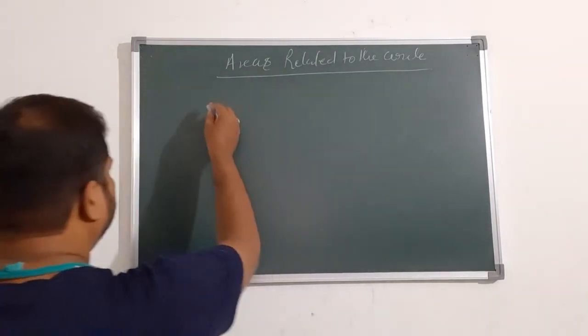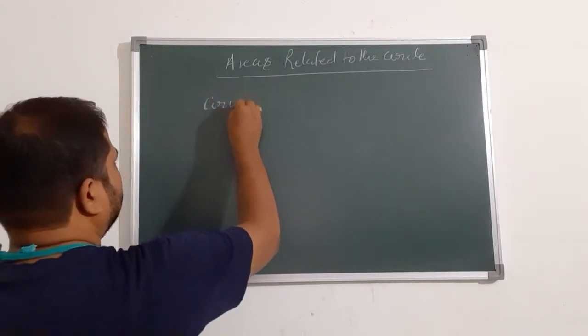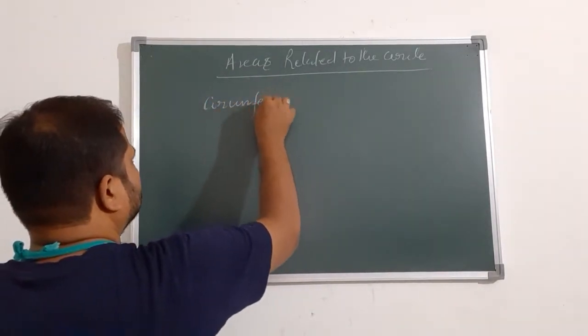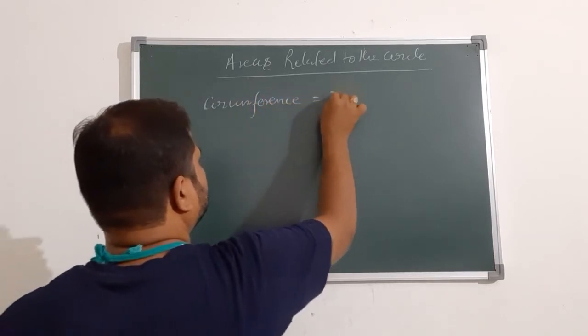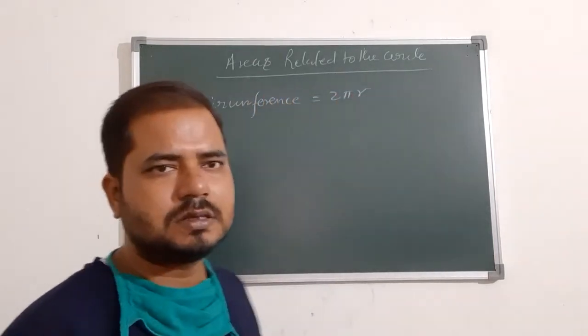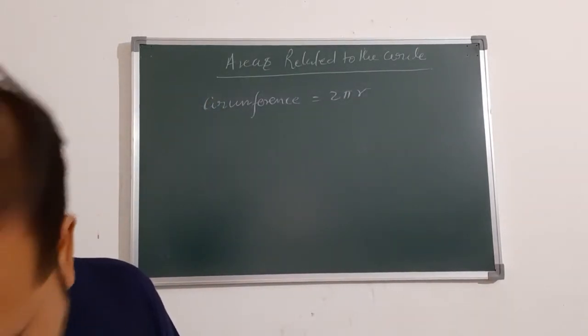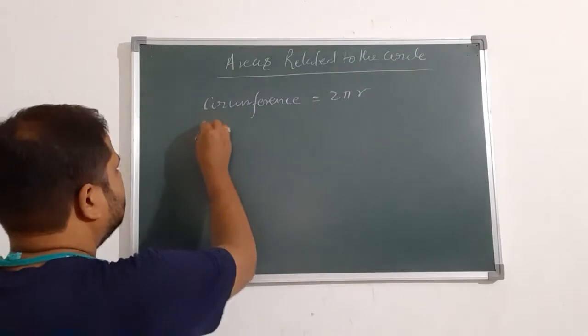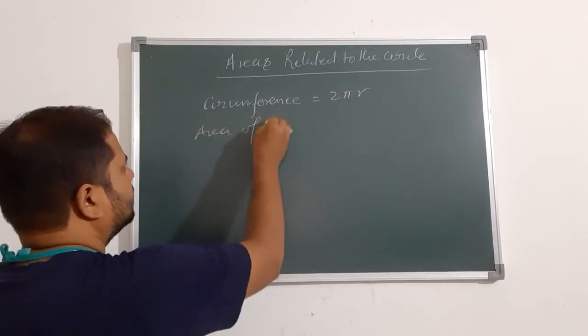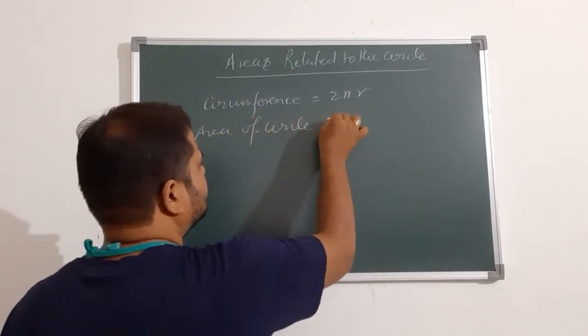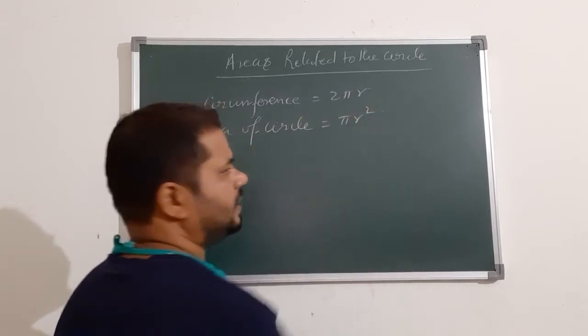So you know very well, circumference is 2πR. Circumference is 2πR. So the area of the circle is, circumference is 2πR.